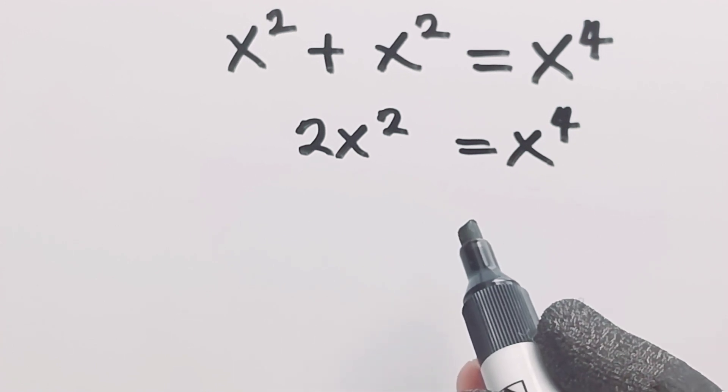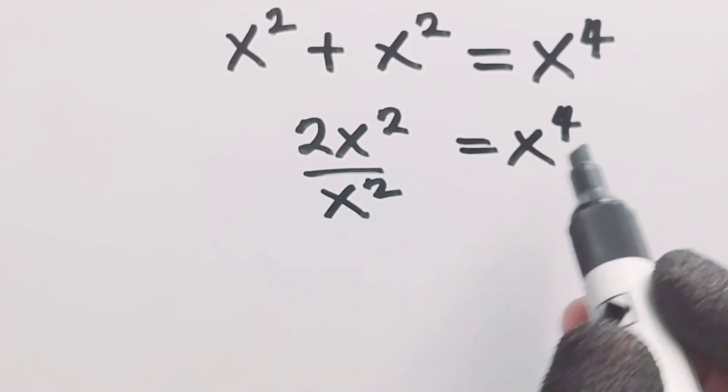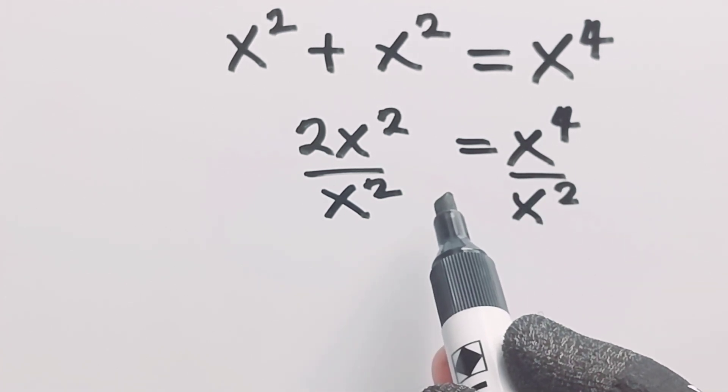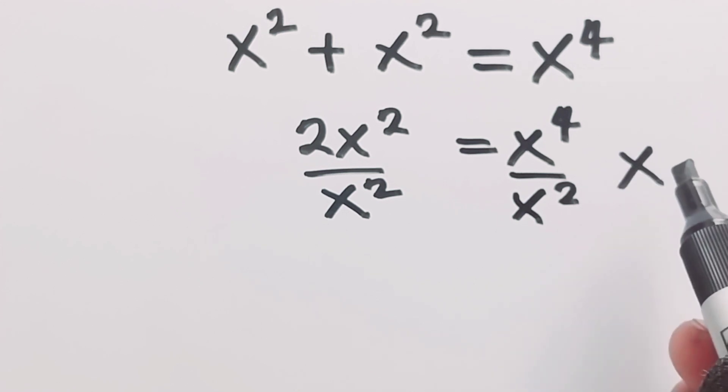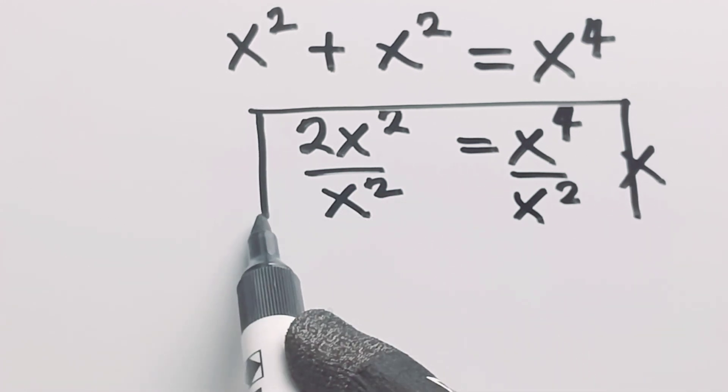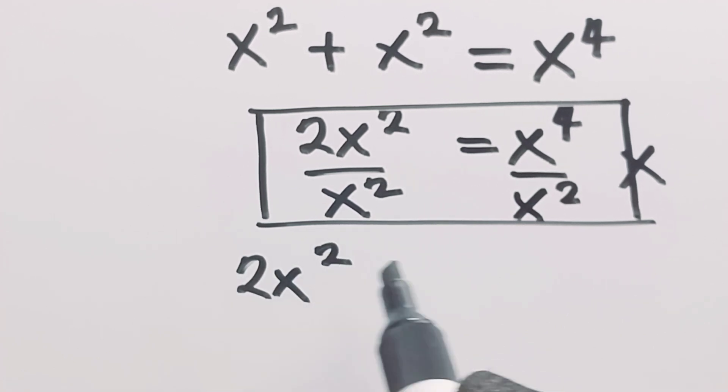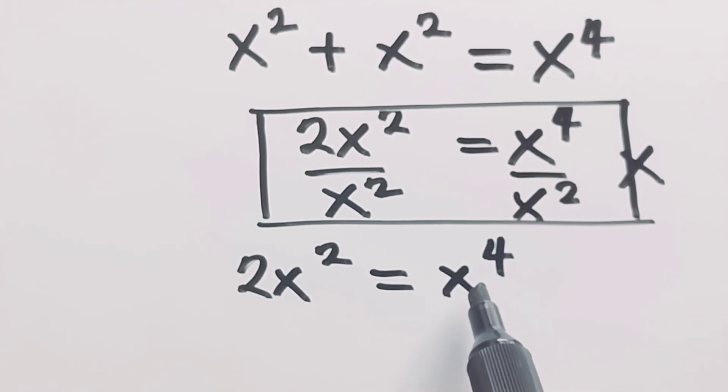Then from here you might be tempted to divide both sides by x squared. For the sake of factorization and obtaining the right amount of solutions, do not do this. This is not a recommended approach. Rather, what you will do after this second step is to collect like terms by transferring x raised to power 4 to the left hand side or transferring 2x squared to the right hand side.